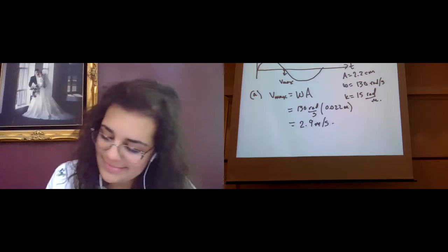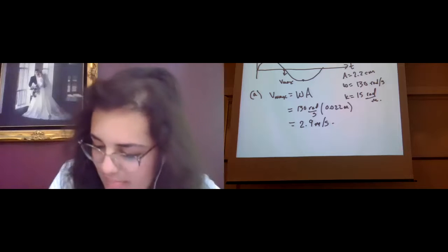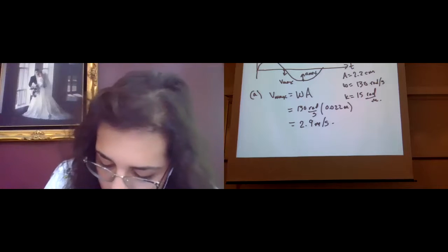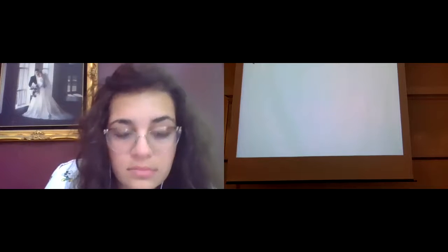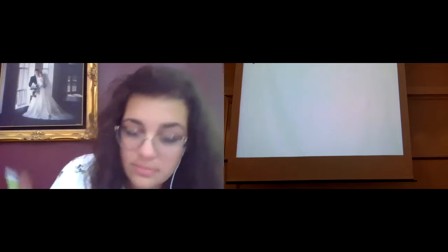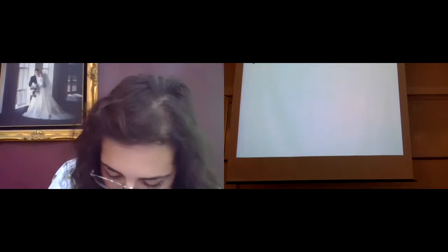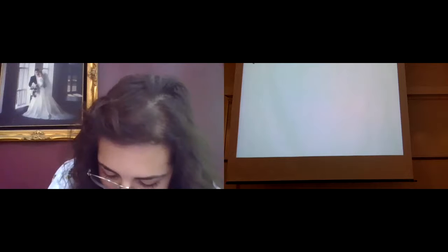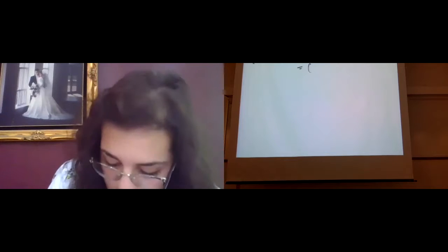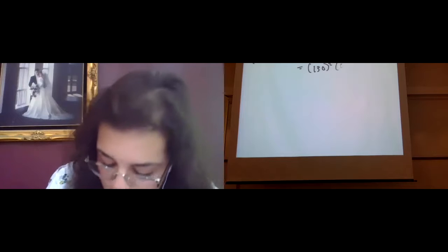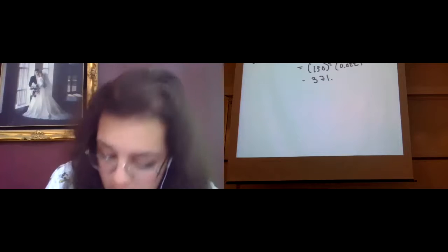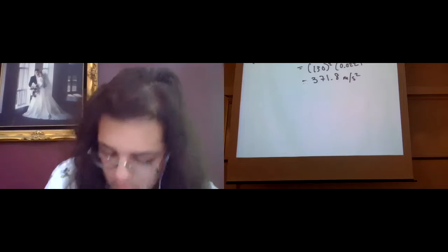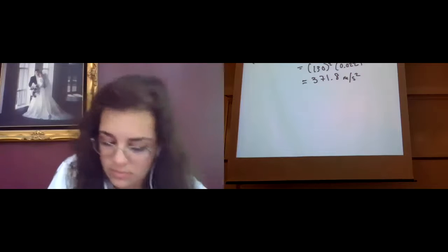Part B is asking about what is the maximum acceleration. We know that the maximum acceleration for harmonic oscillation occurs when the object is at its amplitude. So when it has reached its maximum amplitude, it has the maximum acceleration. The maximum acceleration is given by angular frequency squared times the amplitude — that's 130 squared times 0.022 — which works out to be 371.8 meters per second squared. This is the maximum transverse acceleration.